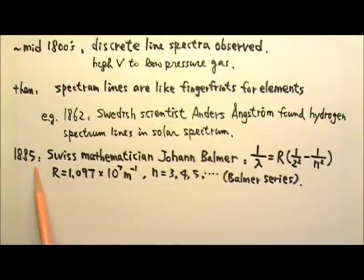Then in 1885, Swiss mathematician Johann Balmer used trial and error methods to develop this simple formula that gives wavelengths that match Angstrom's wavelength measurements for hydrogen spectrum lines. By the way, you do not need to memorize this formula.